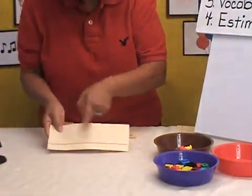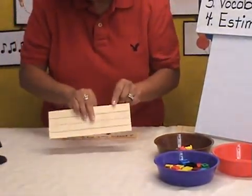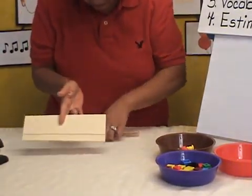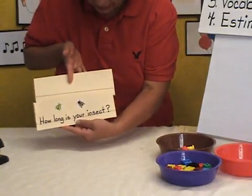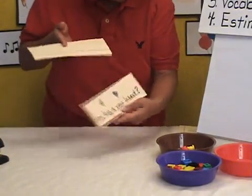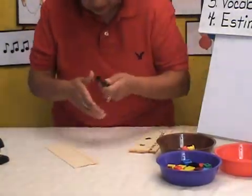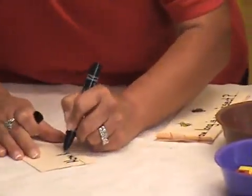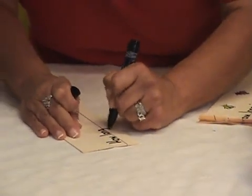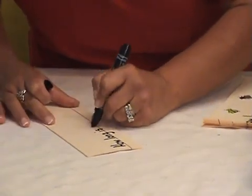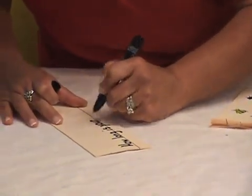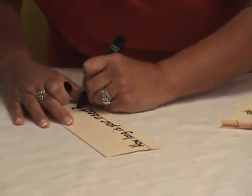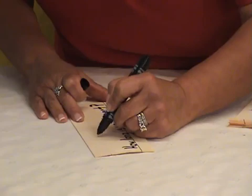It's important that they use this side of the booklet, not this side, because it's much easier for them to write and draw. The title of it is 'How Long Is Your Insect?' So we're going to go ahead and write the title — 'How Long Is Your Insect?' — and then they can also just draw their little insect.